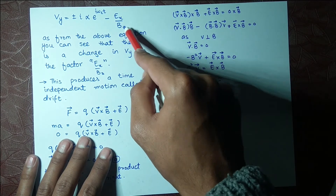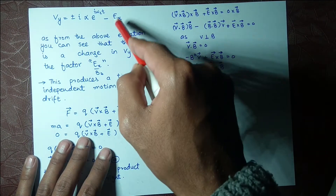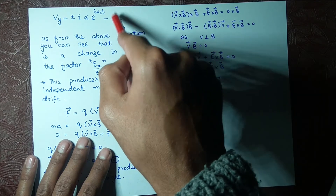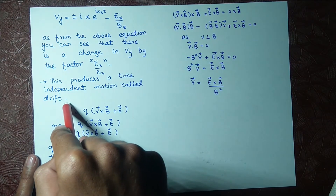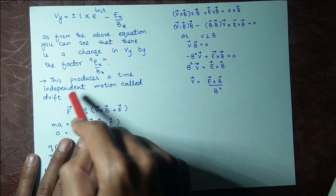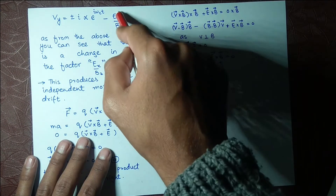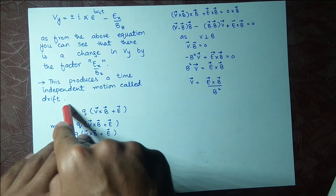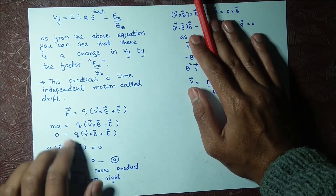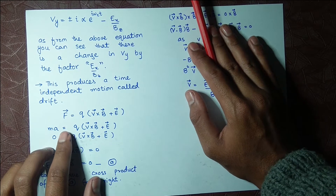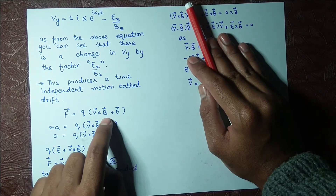This change is time-independent, and this time-independent change is called drift. The motion caused by this time-independent change is called drift. To calculate this change, we have F equals q times the Lorentz force.